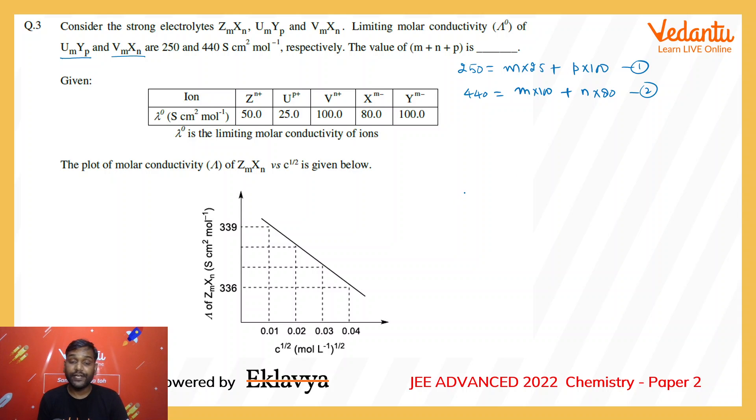We need three equations so that we can find the values of M, N, and P, then add them to get the answer. The third equation we need to calculate from this graph.